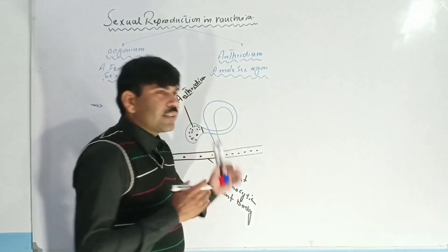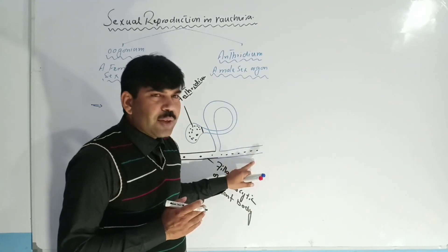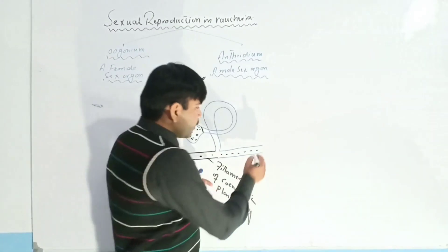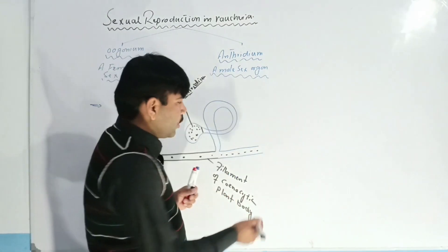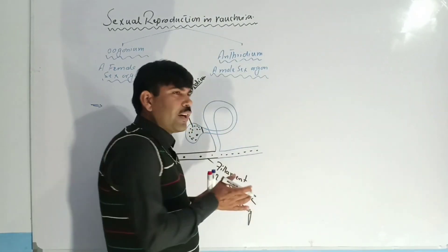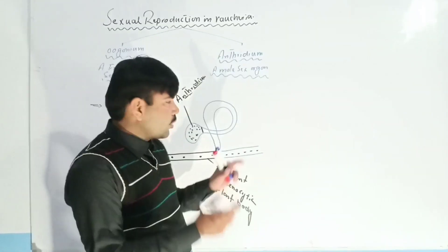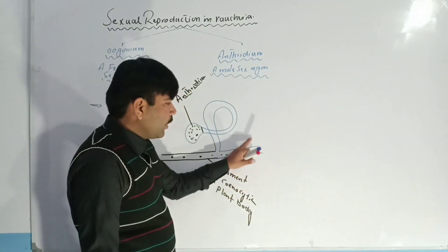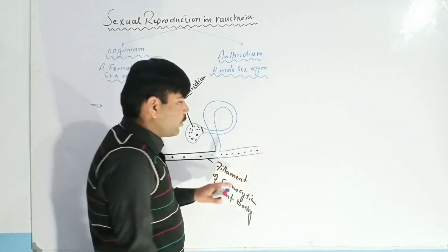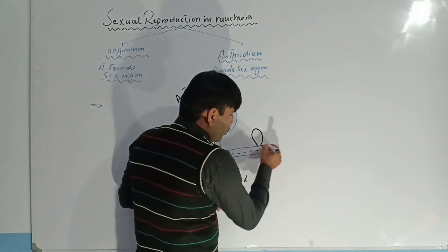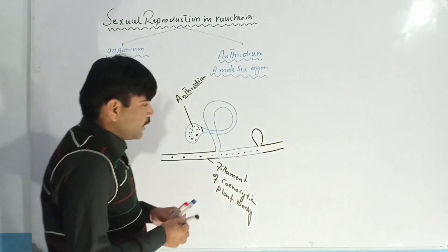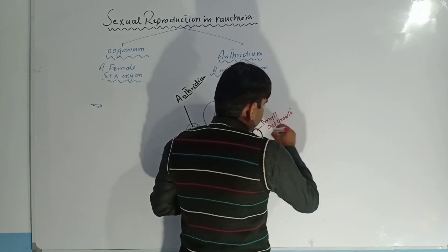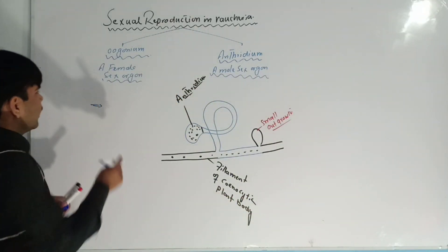Another important point to keep in mind is that the oogonium is produced at the same branch where the antheridium is produced. The oogonium first develops into a small outgrowth exactly near to the antheridium. So this small outgrowth is produced very close to the antheridium on the short branch.